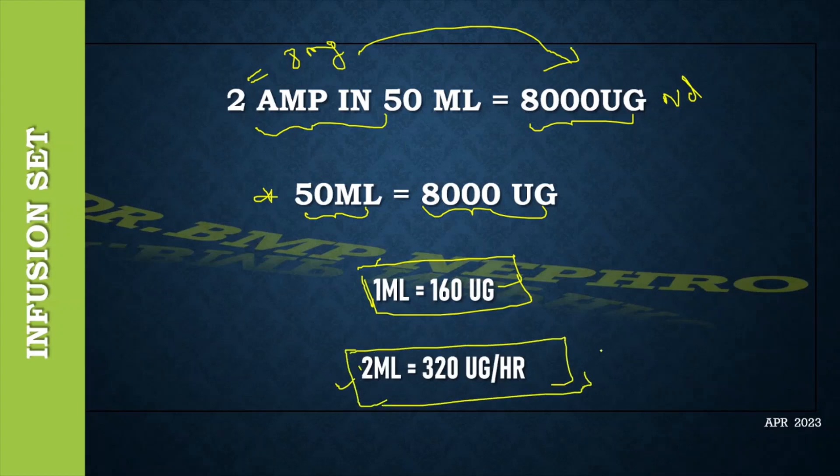Since our starting dose as I told is 10 mcg per minute, which is 600 mcg per hour, if we start at 2ml per hour in the infusion set this will deliver around 320 mcg per hour. So we can titrate it to 3ml and 4ml to reach the required dose. In most situations with 2ml only the patient response might be occurring. Since the starting dose I have mentioned is 10 mcg per minute, for noradrenaline per kg dose is there which is 0.05 mcg per kg per minute, but for most patients this is the dose at which, before this only, the response can occur.